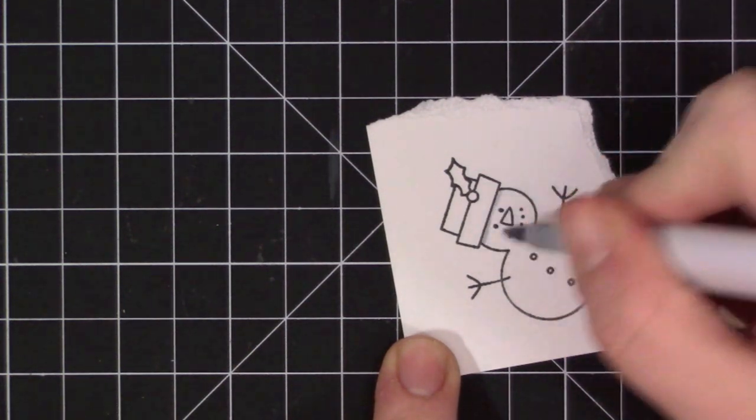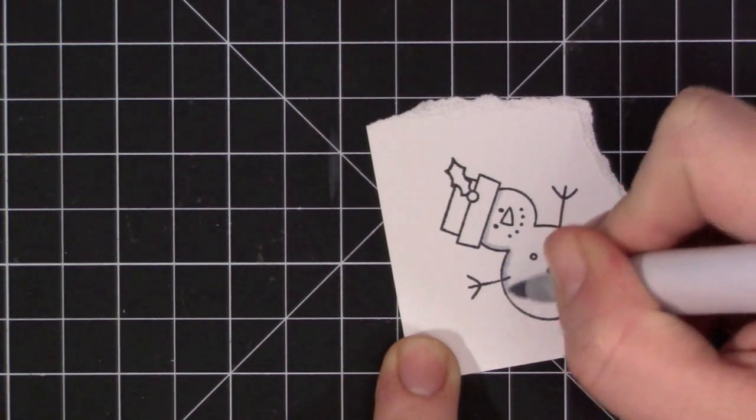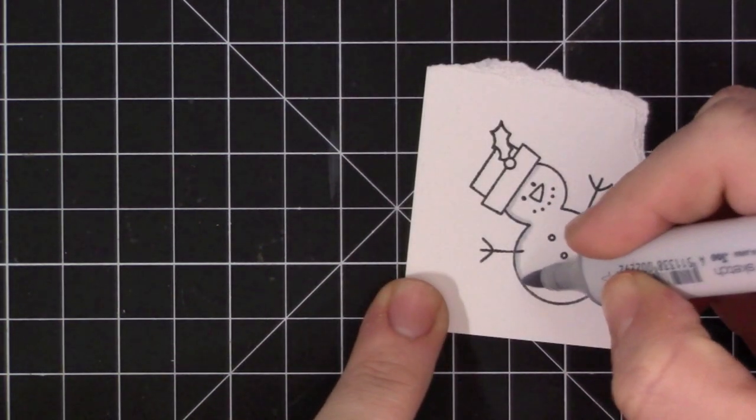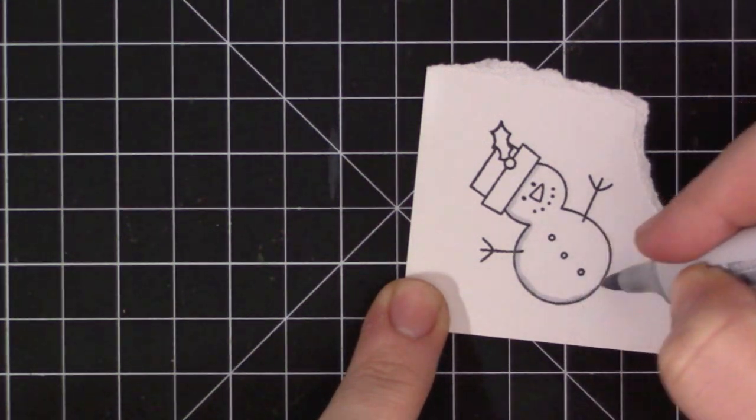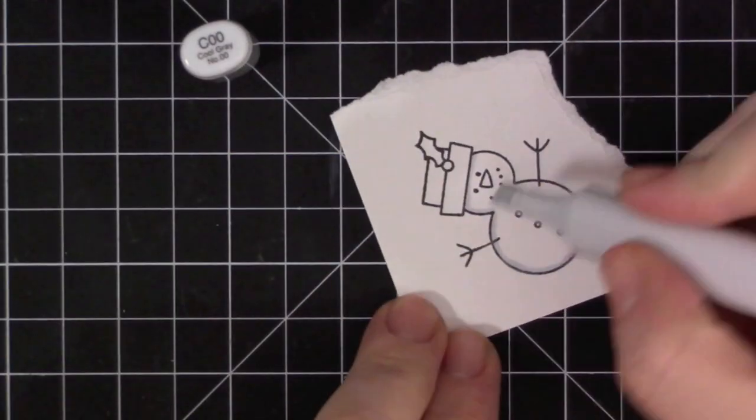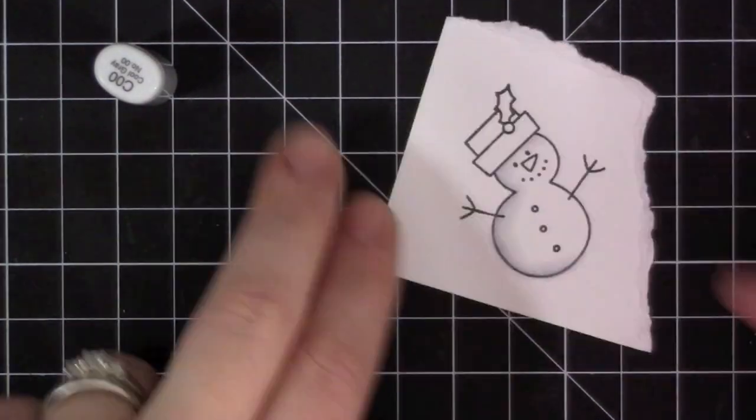So now I just kind of zoomed in here a bit so you can see what I'm doing. And I'm just adding some gray to the edges of the snowman. I'm using C2 here and just kind of doing a very thin line around the left side of him. And then I'm going to use my C00 and kind of pull that color out into his body area.